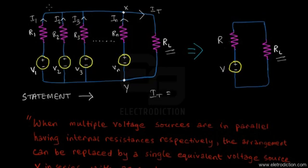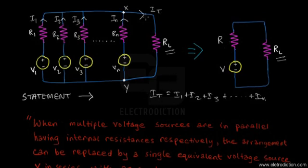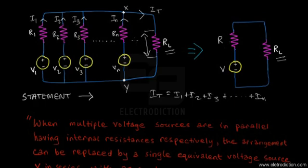We can write the total current as I1 plus I2 plus I3 and so on till IN. This total current flows through the load resistor. The summation of the currents individually coming from the voltage sources connected in parallel gives us the total current through RL. This current passing through the load resistor obviously creates a voltage drop across it — let's call it V.